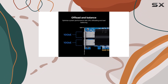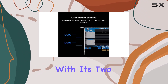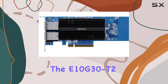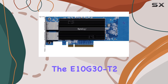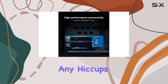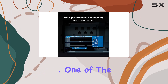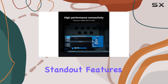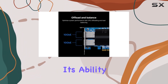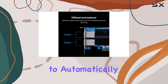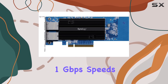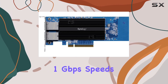Post-production and virtualization. With its two 10GB ports, the E10G30T2 ensures that you can support a growing number of users without any hiccups in performance. One of the standout features of the Synology E10G30T2 is its ability to automatically negotiate between 10Gbps and 1Gbps speeds.